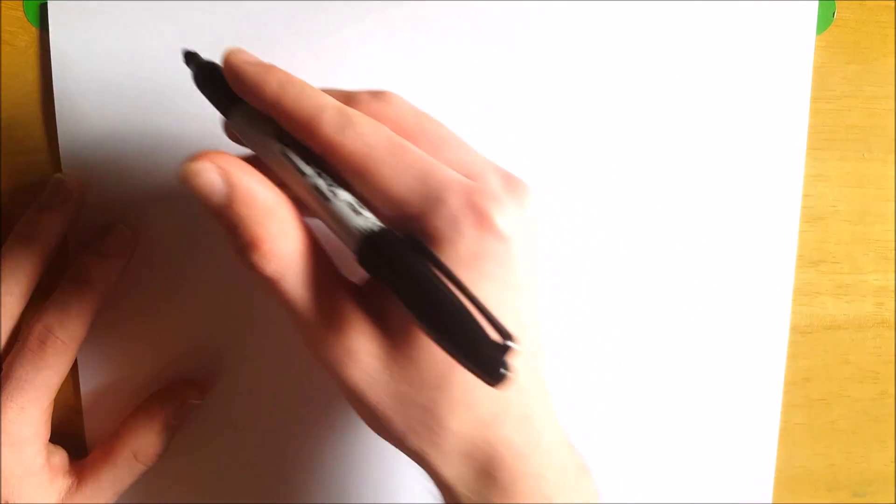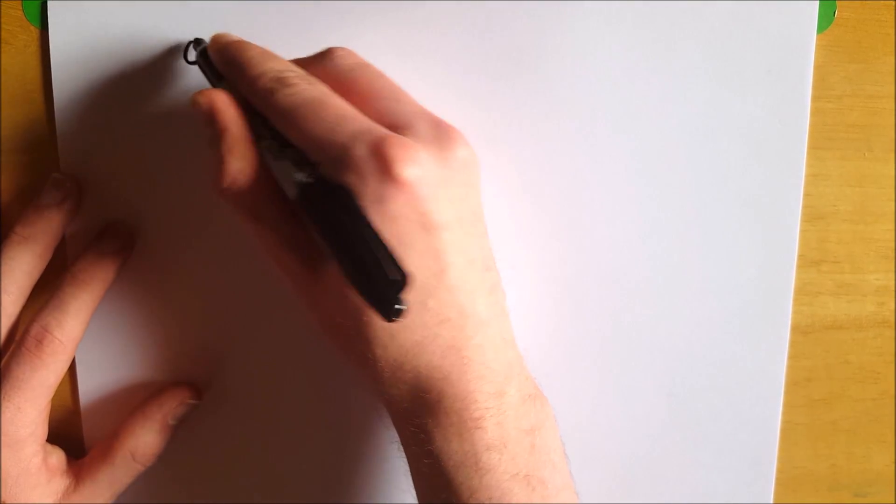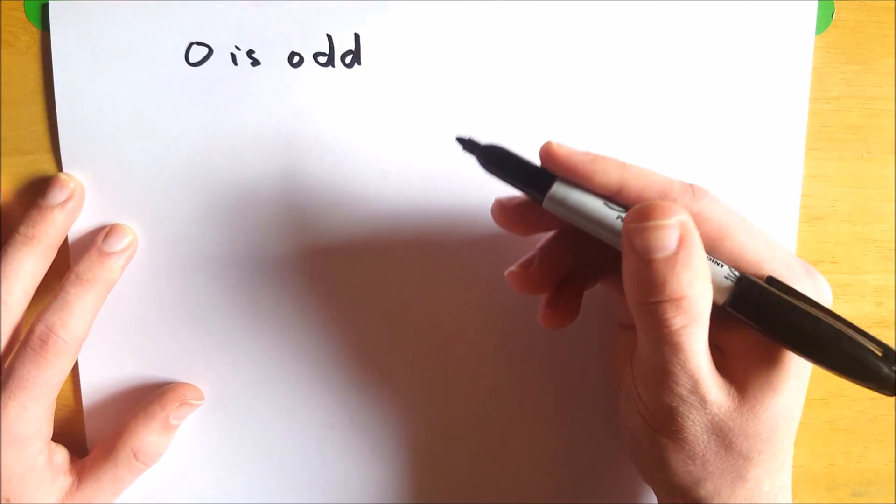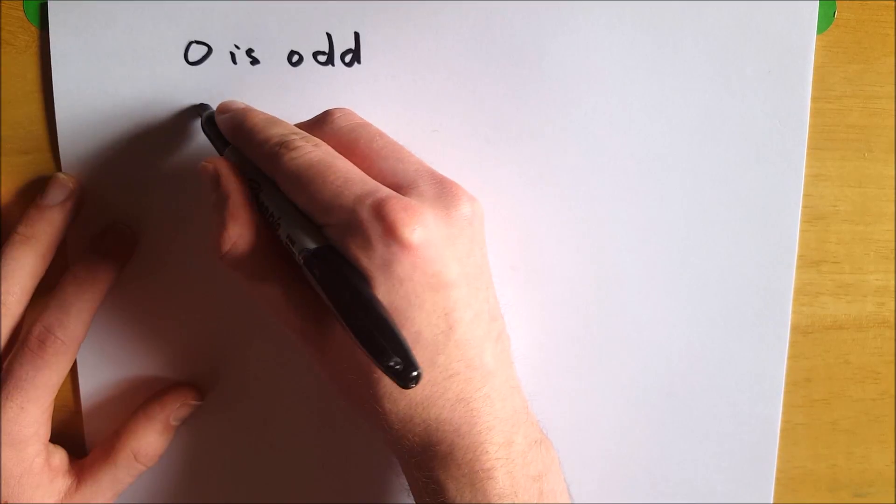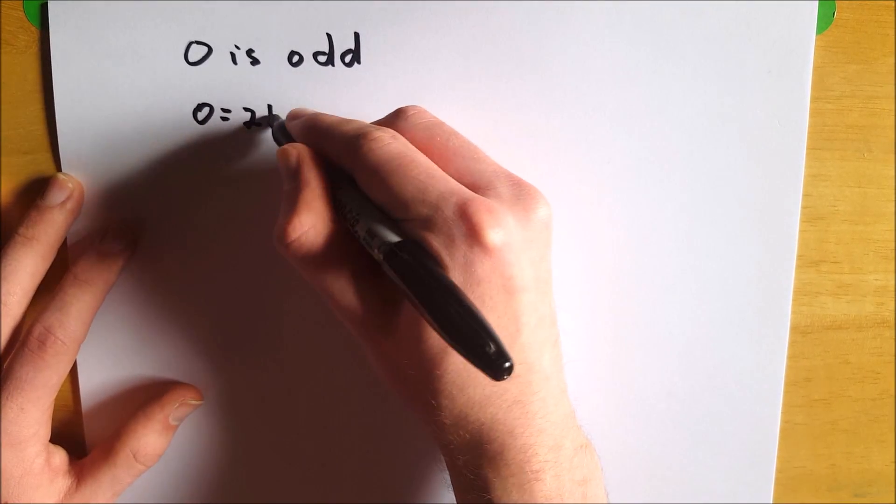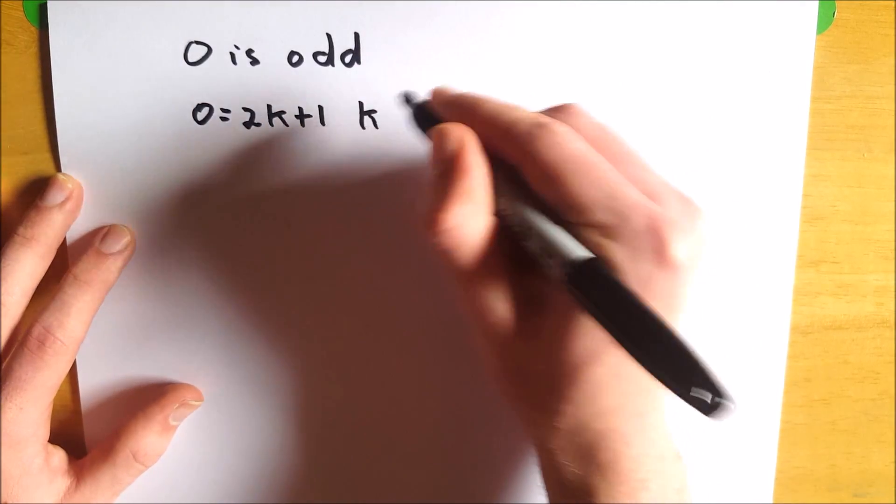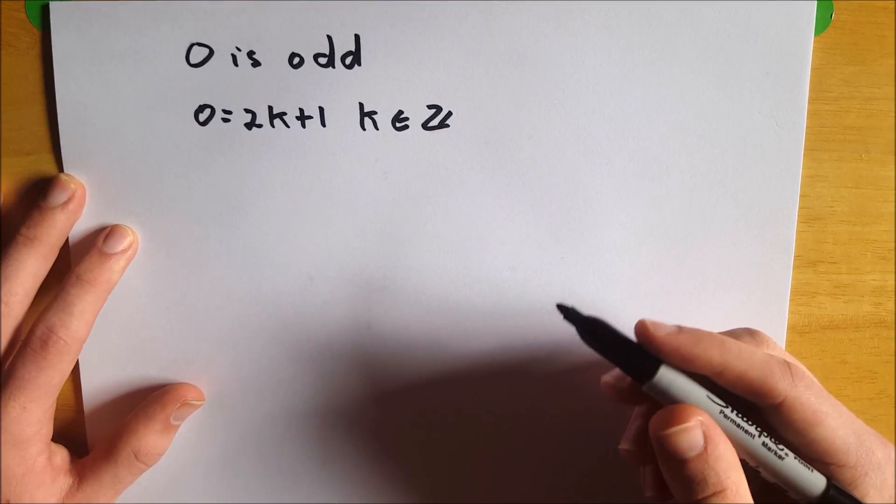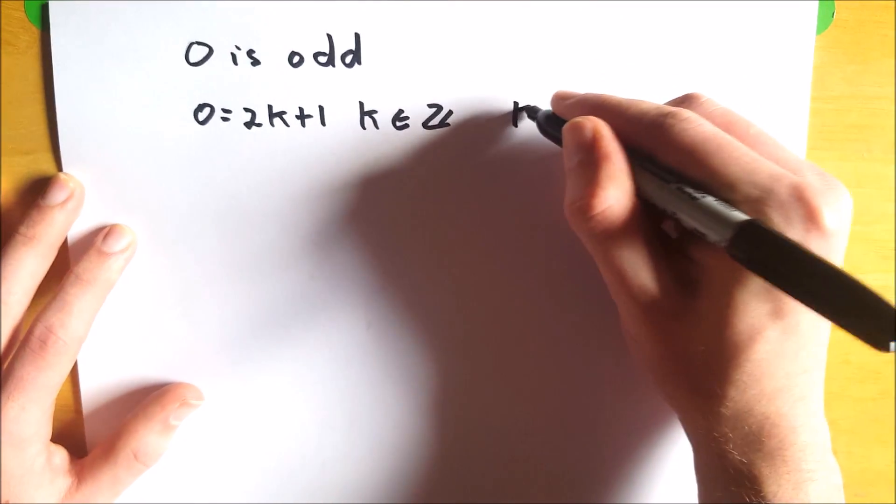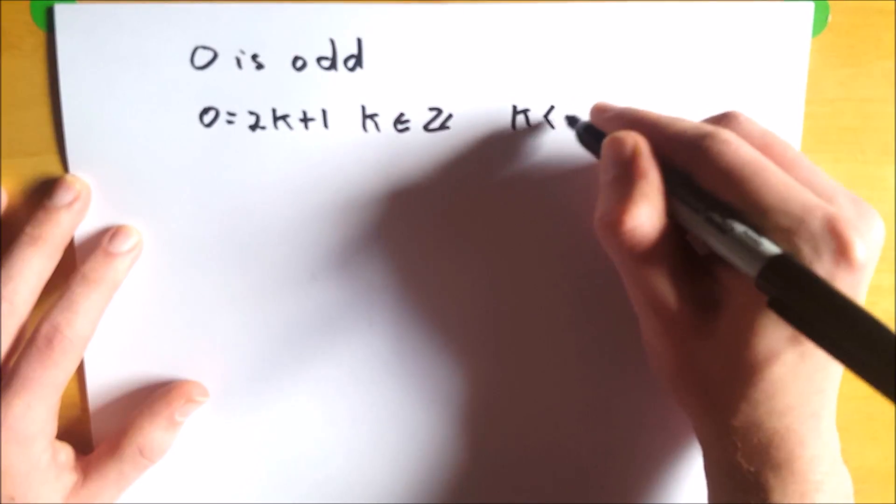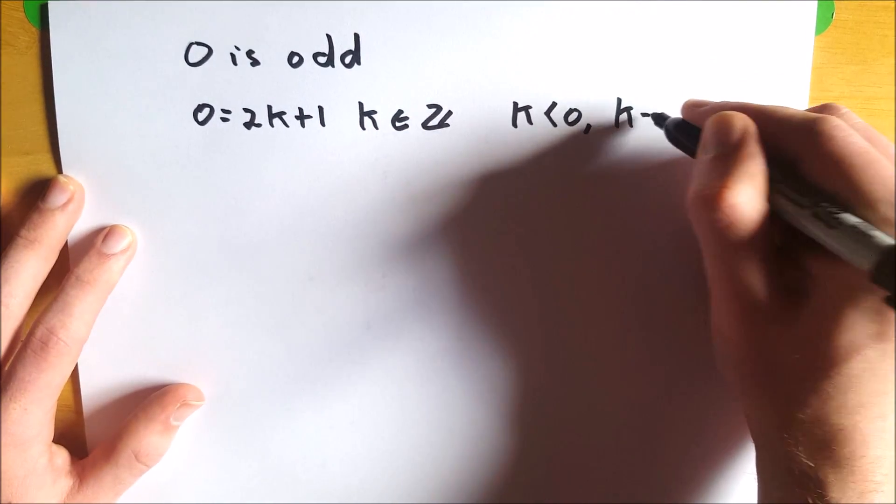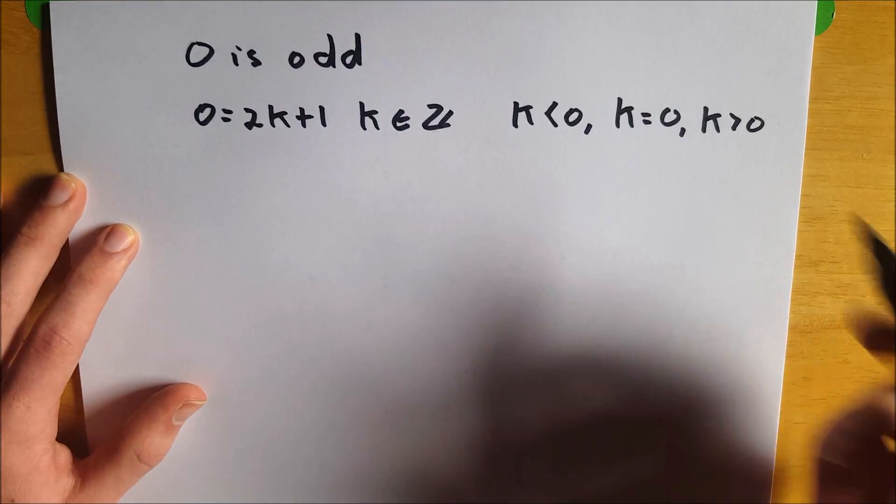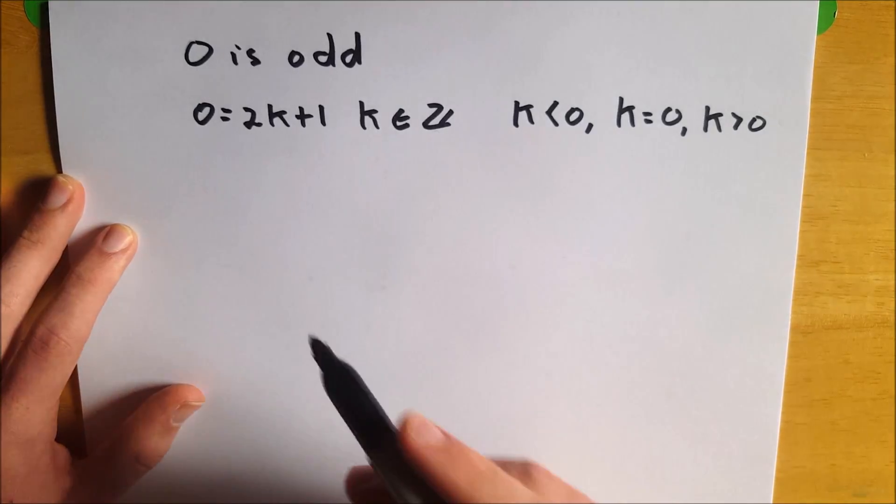So we want to prove zero is even. For the sake of contradiction, we're going to suppose that zero is odd. If you've seen my definition of an odd number video, you'll know that means that zero equals 2k plus one for some k that's an element of Z. And this leaves us with three possible cases: the case where k is negative, so k is less than zero, the case where k is zero, and then the case where k is positive or greater than zero.